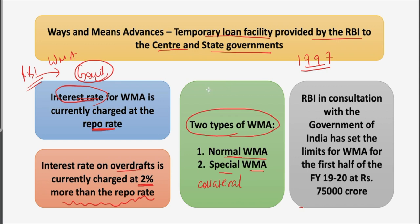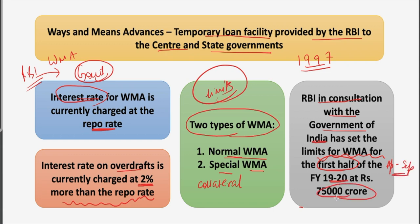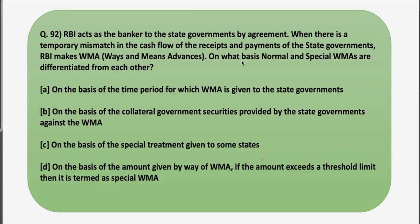You must be wondering about the limits of these WMAs. RBI in consultation with the Government of India has set the WMA limit for the first half of financial year 2019-20, that is April to September, at ₹75,000 crore. Now after this brief discussion, let's move back to the question. The question asks on what basis normal and special WMAs are differentiated from each other.